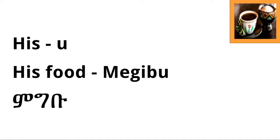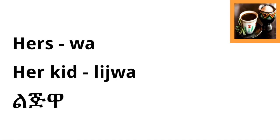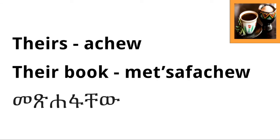Then we have the third person female possessive suffix, which is '-wa.' So if we wanted to say 'her child' — the word for kid or child is 'lij' — and if we want to express that the child belongs to a woman, we add '-wa' and get 'lijwa.' Her child is 'lijwa.'